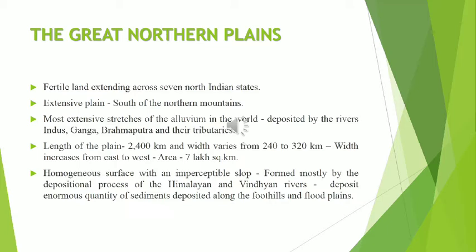The Great Plains of India is remarkably a homogeneous surface — there is no much difference when you see the overall area of the plain. It looks like a slope, but imperceptible, meaning very small and unable to be seen or felt. They are formed by the depositional process of the Himalayan and the Vindhya rivers, and are located between the Himalayas and the Vindhya-Sathapura range. The great plains are located just in between the Himalayan range and the Vindhya-Sathapura range.